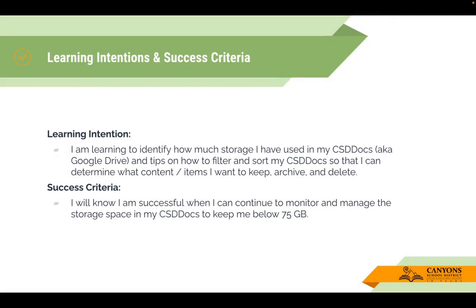The learning intention for this ByteSizePD is: I'm learning to identify how much storage I have used in my csddocs, aka Google Drive, and tips on how to filter and sort my csddocs so that I can determine what content or items I want to keep, archive, and delete. The success criteria is I will know I'm successful when I can continue to monitor and manage the storage space in my csddocs to keep me below the 75 gigabyte limit.